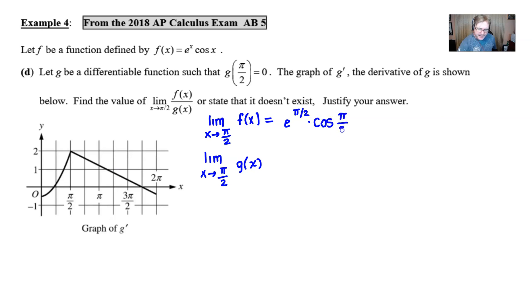Now notice that cosine of π/2, that is indeed equal to 0. And so that's going to wipe out this entire quantity and thus give us the 0. We're on our way to being able to use L'Hopital's rule.